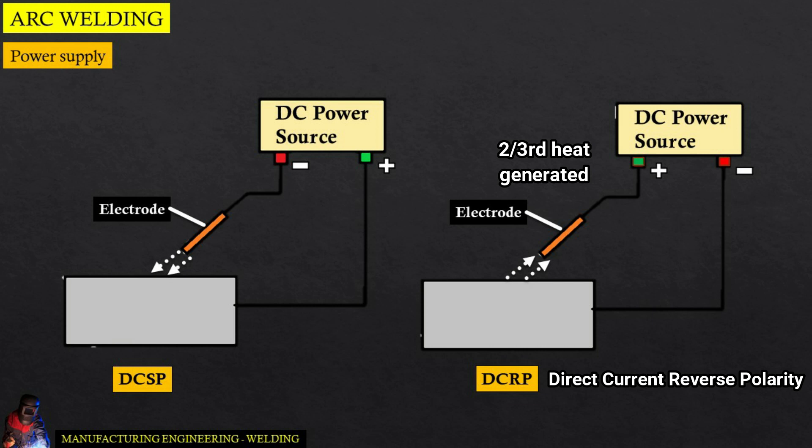AC, or alternating current, is essentially a combination of DC SP and DC RP.